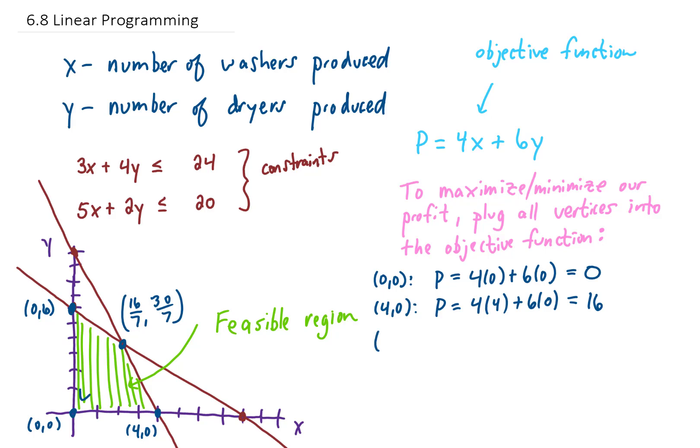How about the vertex (0, 6)? Plugging in x equals 0 and y equals 6 gives us this, which simplifies to $36 profit.